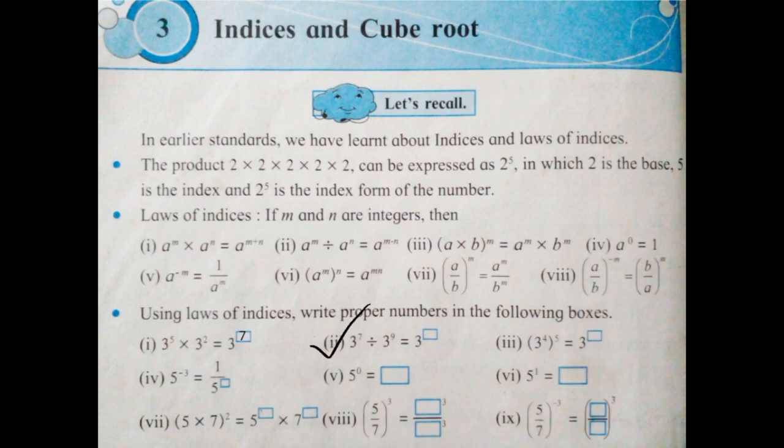Next: 3 raised to 7 divided by 3 raised to 9 is equal to 3 raised to box. The formula is A raised to M divided by A raised to N is equal to A raised to M minus N. In division, if the bases are same and the indexes are different, you have to write the indexes in subtraction form.